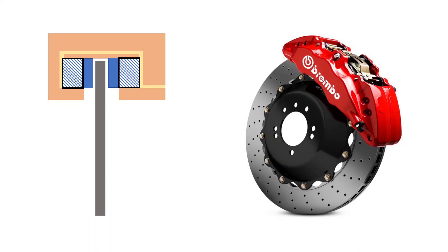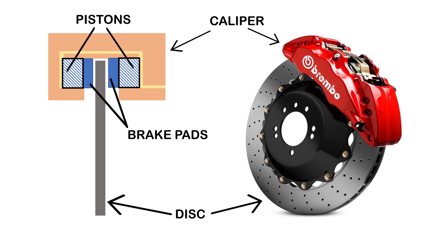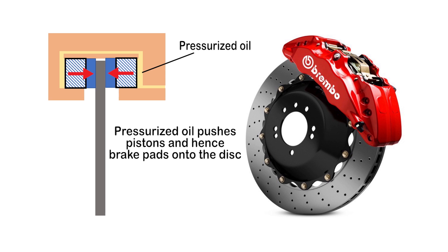The second type of brake is the disc brake. In a disc brake, there is a disc rigidly attached to the wheels which rotates with it. There is another component called the caliper, which is placed on the disc and has a cavity in which the disc sits. On both sides of this cavity — that is, on both sides of the disc — there are two brake pads, and pistons behind the brake pads push them against the disc. Due to the friction between the brake pads and the disc, the braking action takes place.